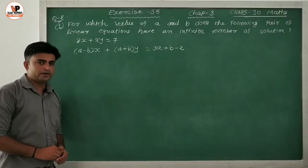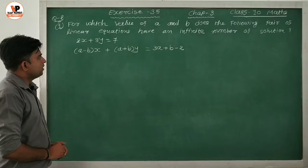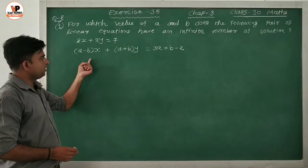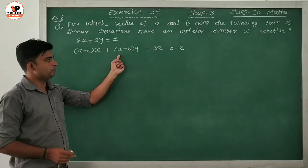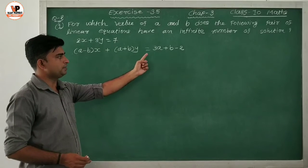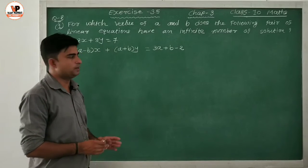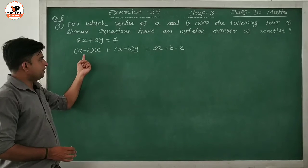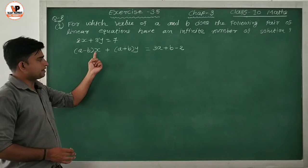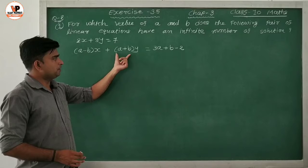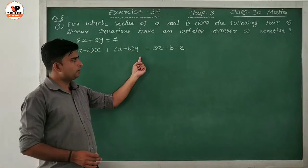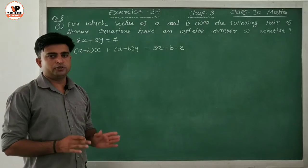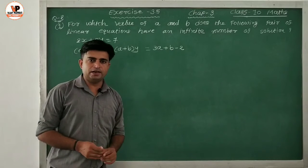The first equation given is 2x + 3y = 7, and the second equation is (A - B)x + (A + B)y = 3A + B - 2. So here, in the second equation, (A - B) is the x coefficient, (A + B) is the y coefficient, and (3A + B - 2) is the constant. We need to find the values of A and B.